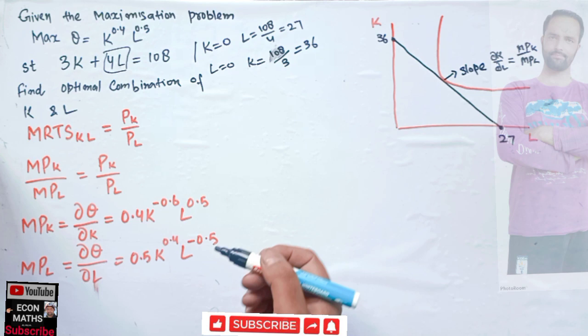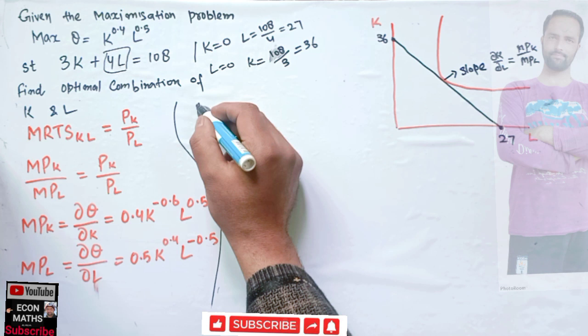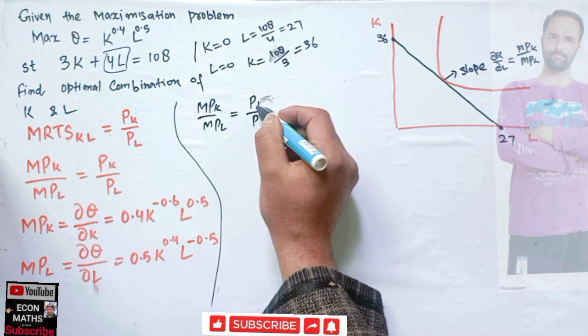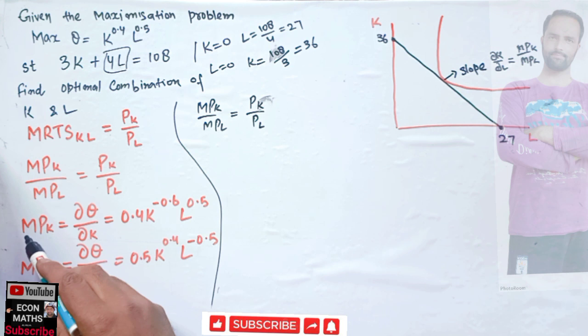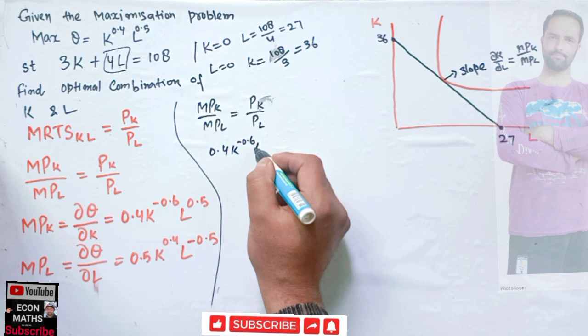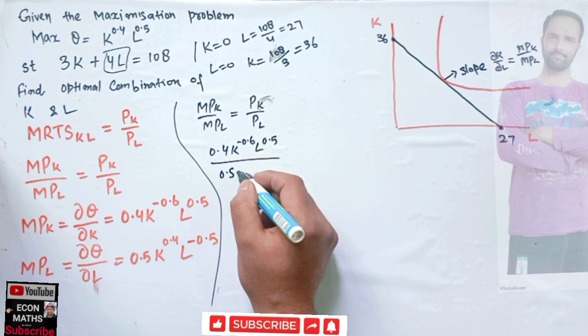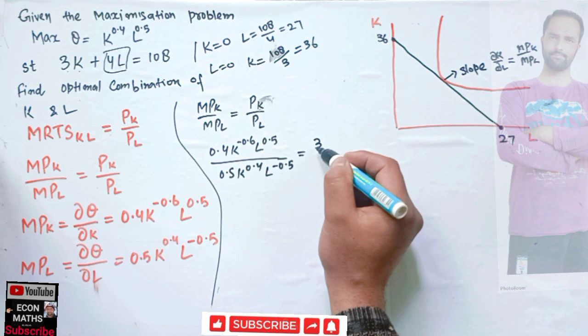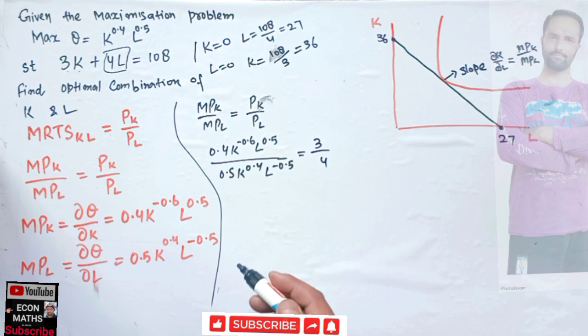Using this condition: MPK / MPL = price of capital / price of labor. So we have (0.4 * k^(-0.6) * l^0.5) / (0.5 * k^0.4 * l^(-0.5)) = 3/4. Simplifying 0.4 / 0.5 gives us 0.8.